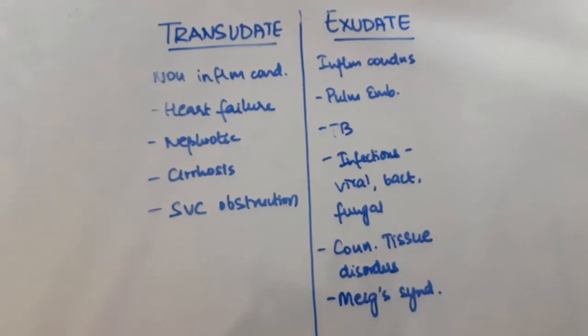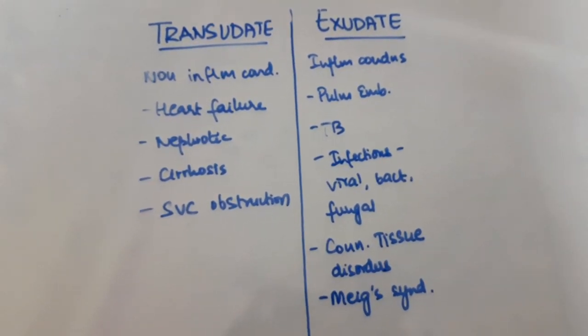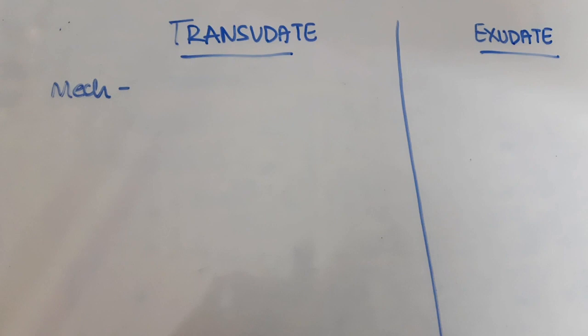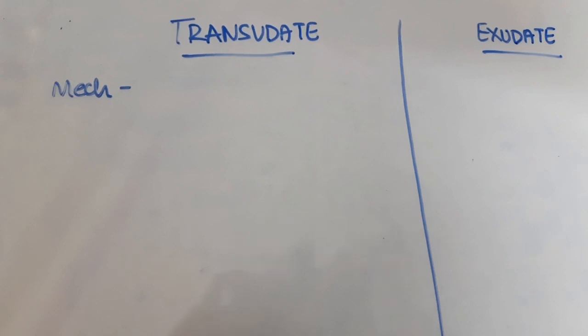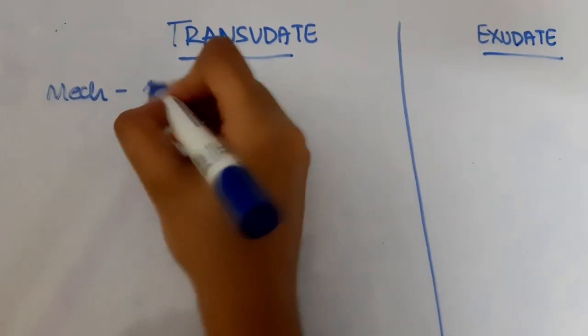Now, let us look at the features of exudates and transudates. The main thing that you have to remember is that exudates are seen in inflammatory conditions. So, all the features of exudates will have an inflammation-like appearance.